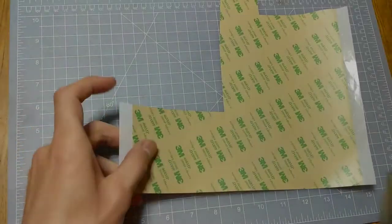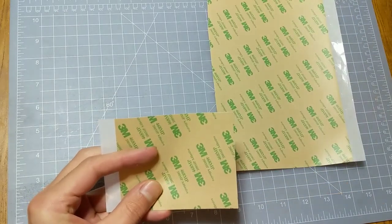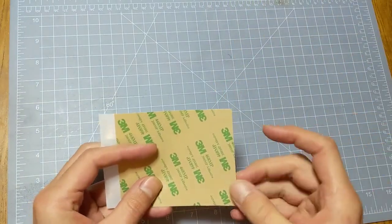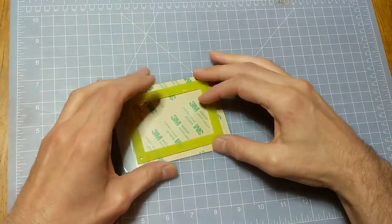First up we'll cut out a strip of the adhesive to attach to the FR4 frame. It just needs to be big enough to cover it. So that looks good.